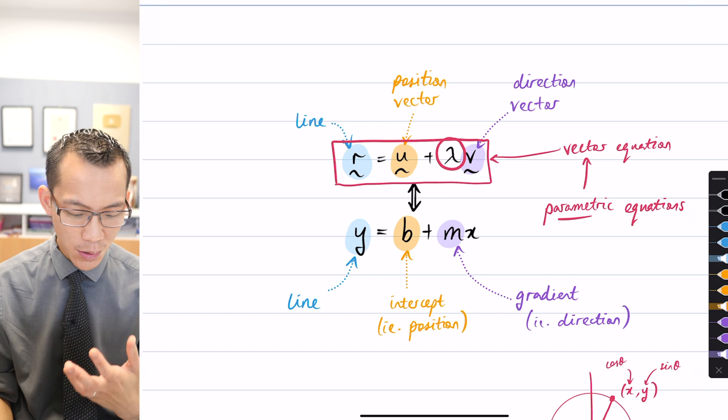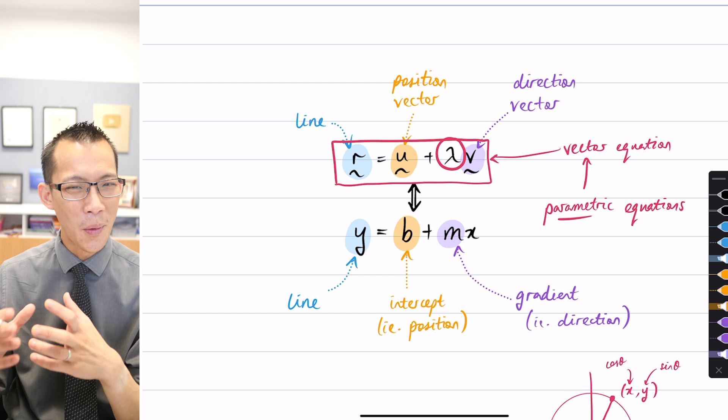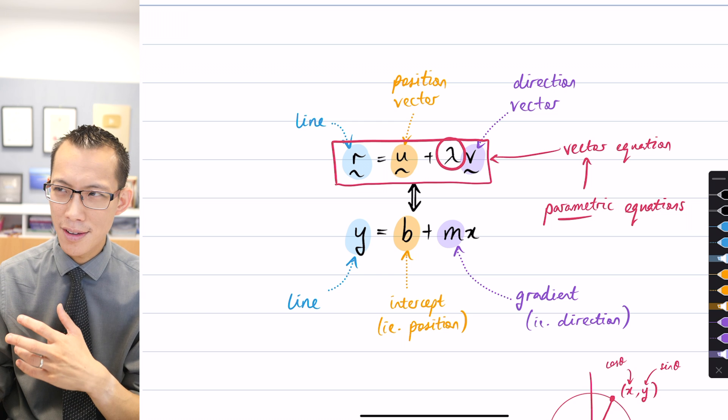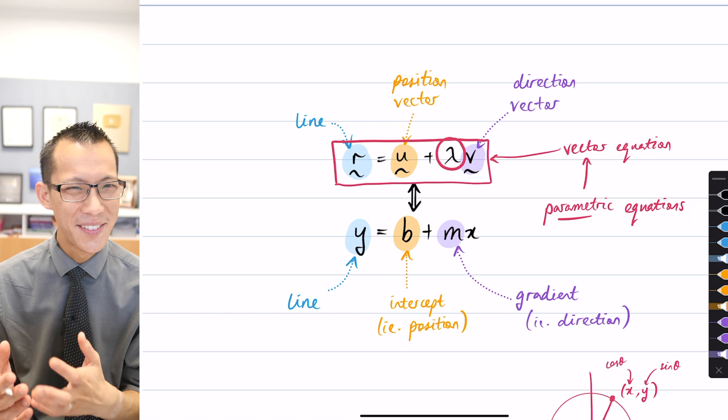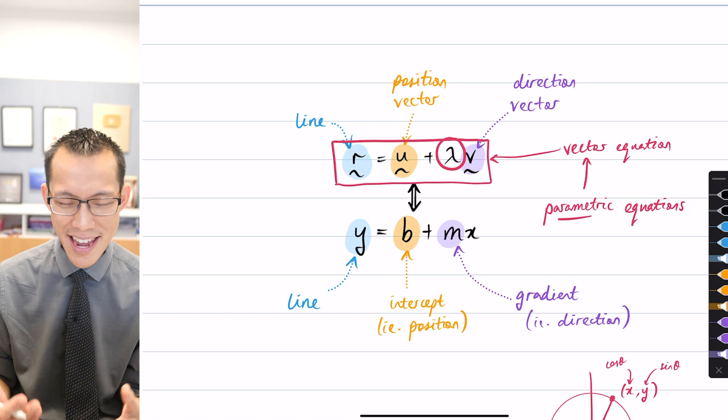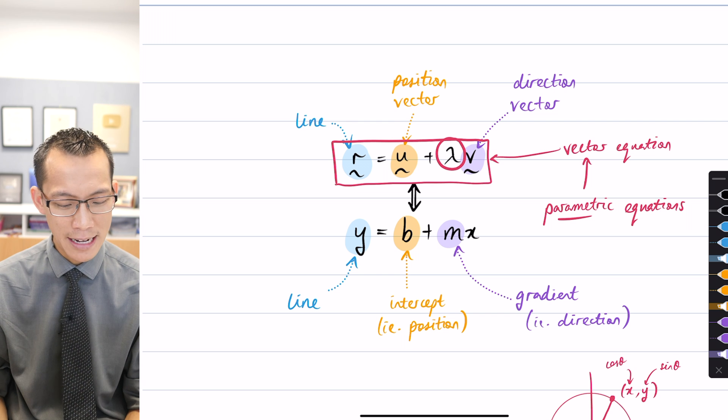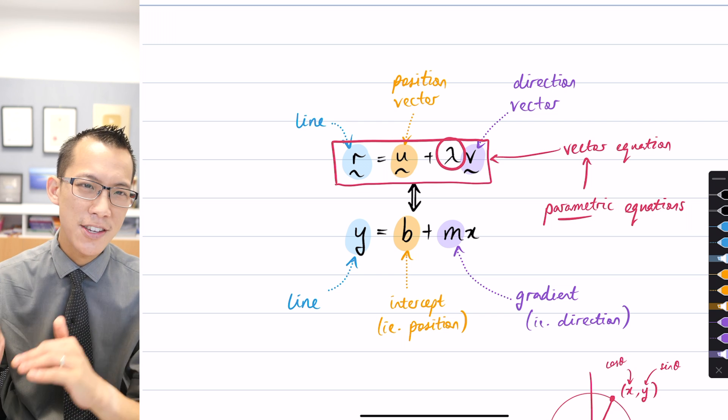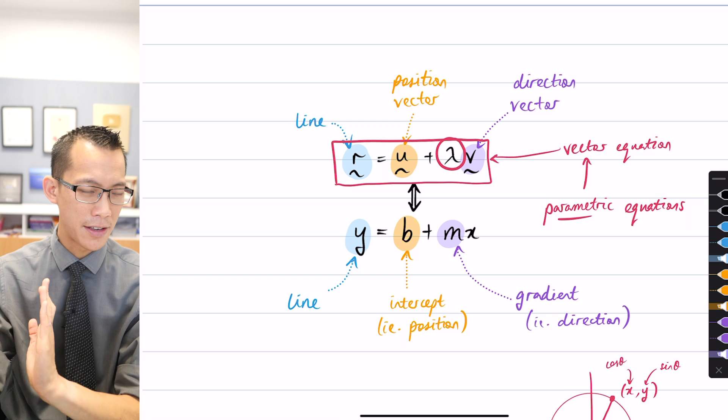We were looking at this form and saw the parallel—pun intended—with the gradient intercept form of a straight line, y equals mx plus b, though writing it as y equals b plus mx turned out to be an easier way to think about it. There's the position vector which gets us on the line and the direction vector which tells us which way we're facing.